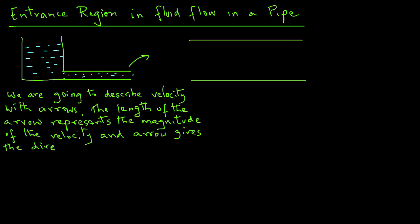We express that by using arrows. The length of the arrow is the magnitude of the velocity and the arrow itself tells you the direction. If the velocity in the cross section of the pipe is constant, then we can draw these arrows of equal length, all pointed towards the right to show that the velocity is constant as the fluid enters this pipe.